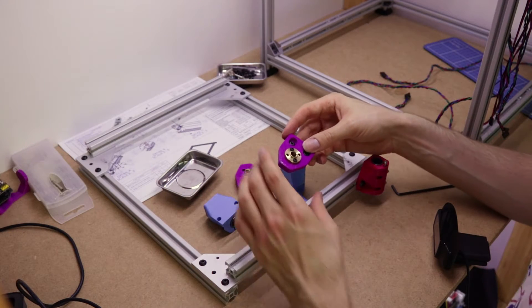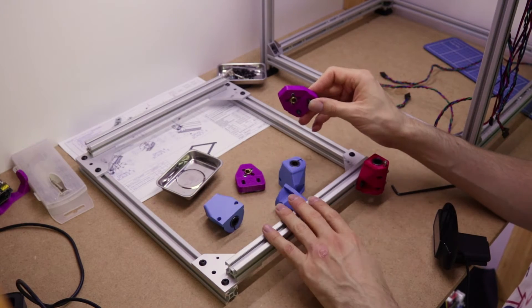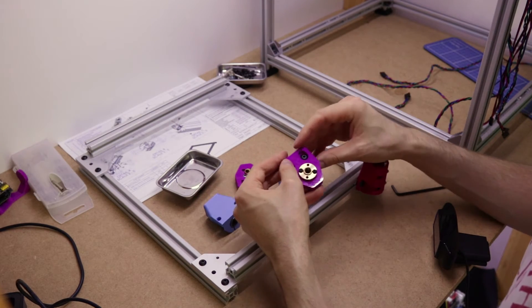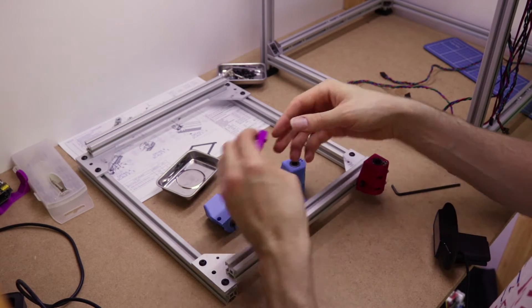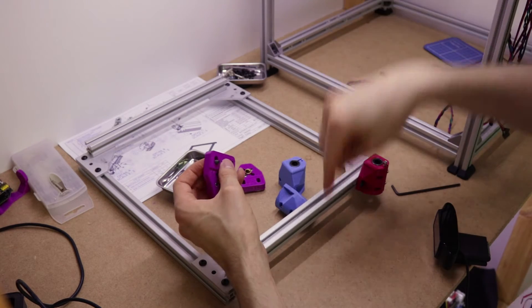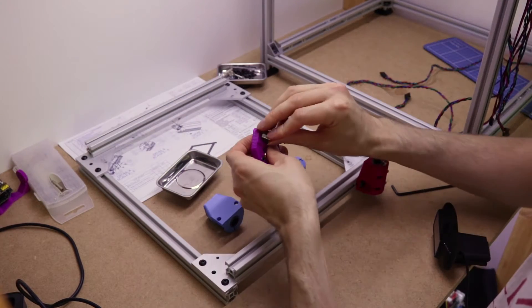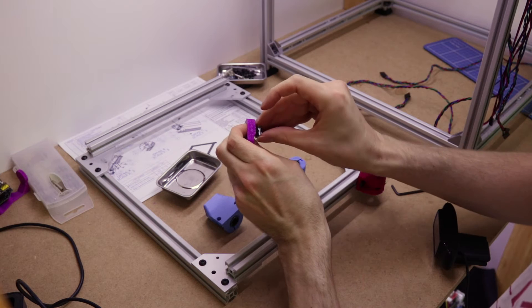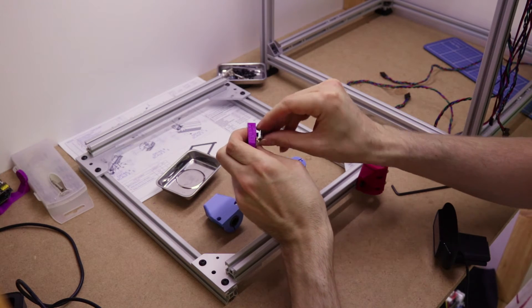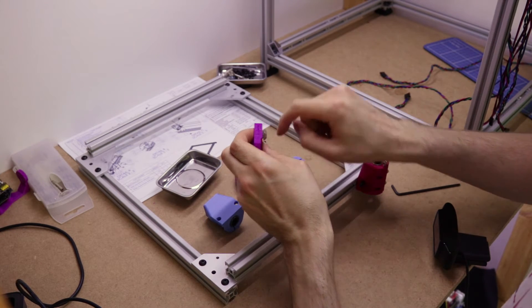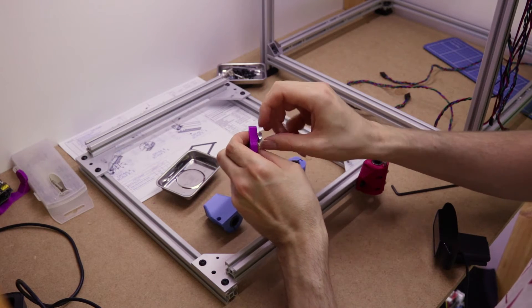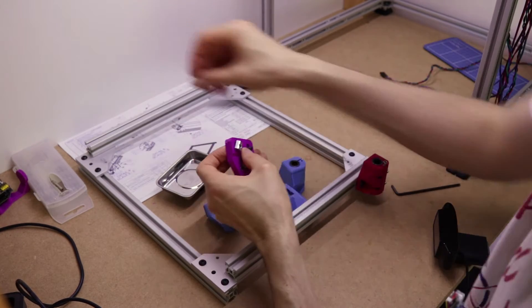The next part you want to do is this, which will hold the bed platform assembly onto the, completely forgotten the name of the spirally things that do the height adjuster thing. Lead screw, there you go. So yes, obviously they've got the lead screw nuts or lead nuts, whatever you want to call them, on here already.